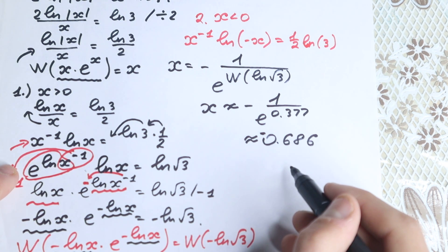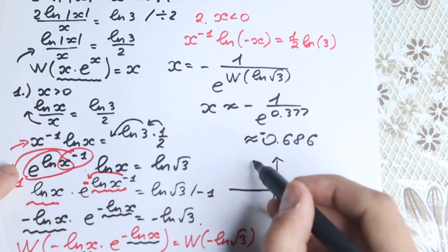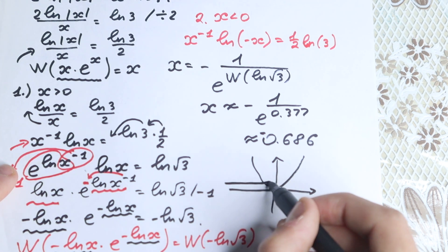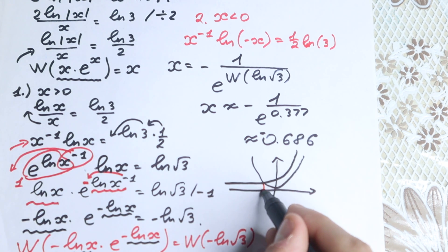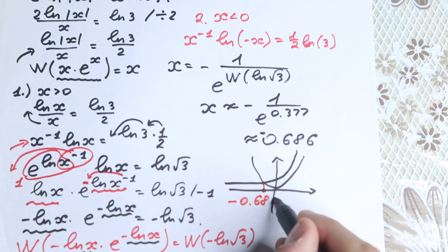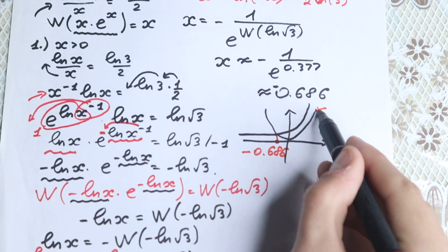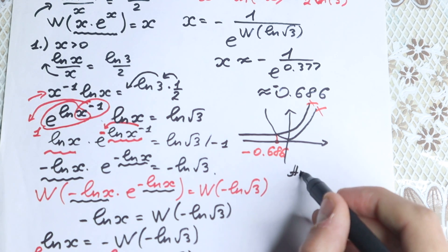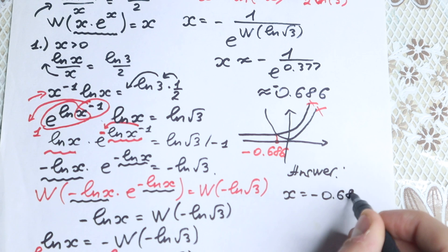This is the one and only root to this equation. Looking at the graph, we have x-squared — our classic parabola — and our exponential function 3 to the x. The two functions do not intersect on the positive side, confirming no positive solution. The only intersection is at x ≈ minus 0.686.